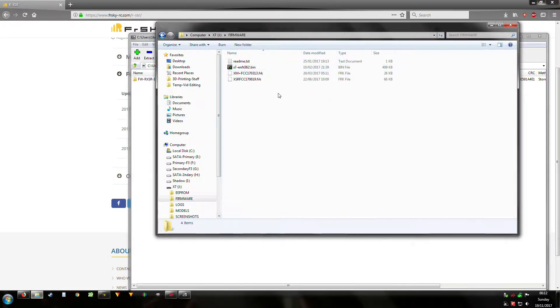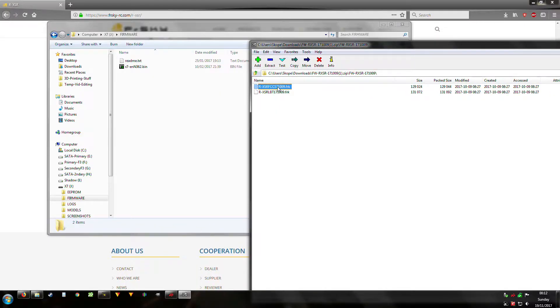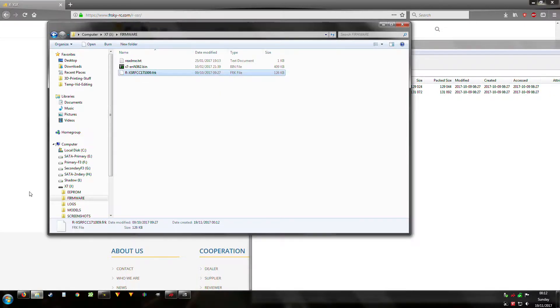Firmware folder. I want my FCC, not the LBT. Just drag and drop that on there. Right, done.